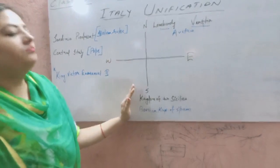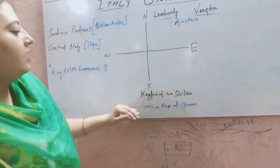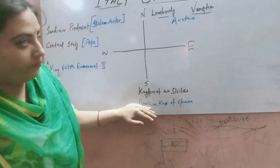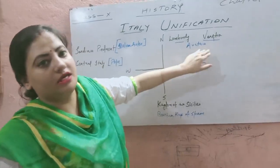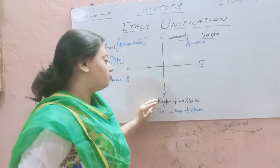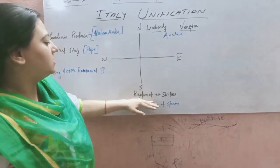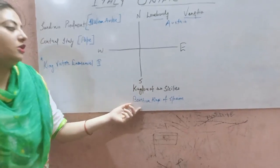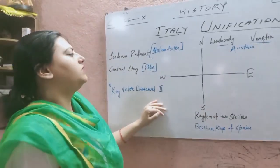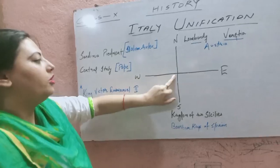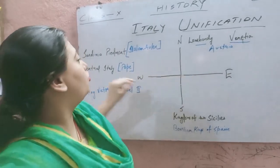The southern part of Italy was under the control of the Bourbon kings of Spain. The northern part — Lombardy and Venetia — was controlled by Austria. The southern part, known as the Kingdom of Two Sicilies, was under the control of the Bourbon king of Spain. The central part of Italy was being controlled by the Pope.